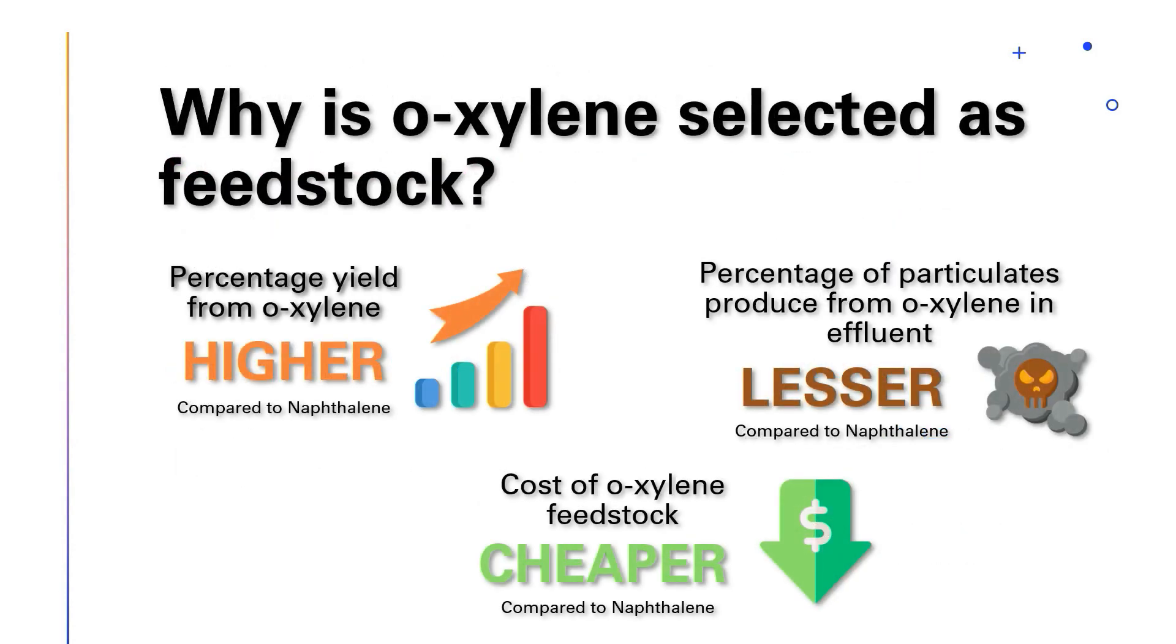Why is o-xylene selected as the feedstock? When compared to naphthalene, o-xylene has higher percentage yield, lower percentage of particulate in effluent, and the o-xylene feedstock is cheaper.